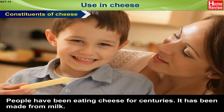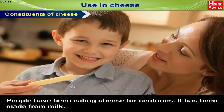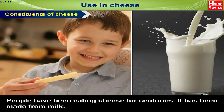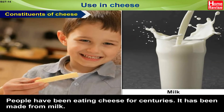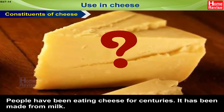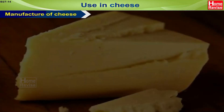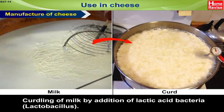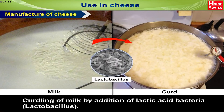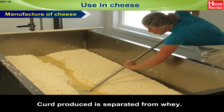People have been eating cheese for centuries; it has been made from milk. Manufacture of cheese: the first step is curdling of milk by addition of lactic acid bacteria, that is Lactobacillus. The curd produced is then separated from whey.